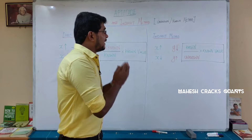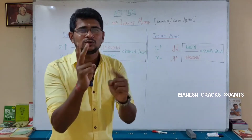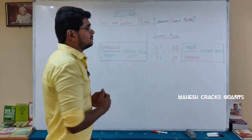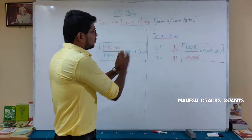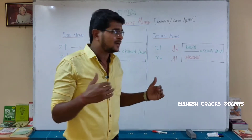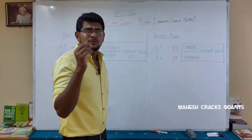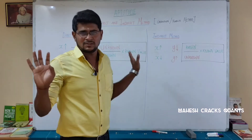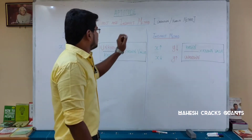So why direct and indirect method? Because we are going to solve problems in maximum one or two steps. If you are well aware of this method — which is my own method — you could solve around 65% of the problems in just 20 to 30 seconds, however difficult the question is.